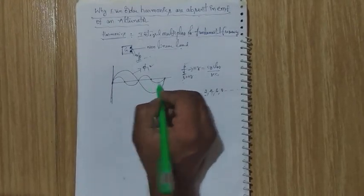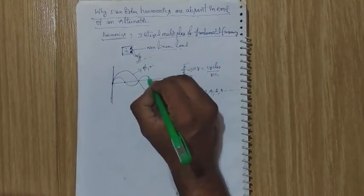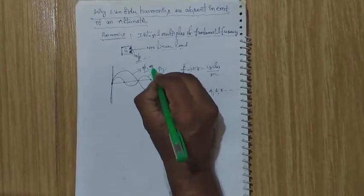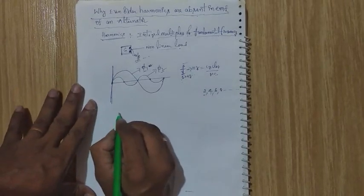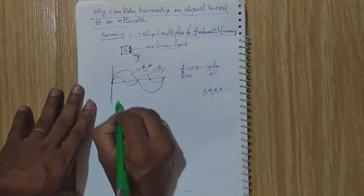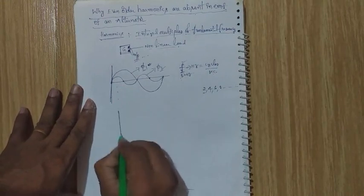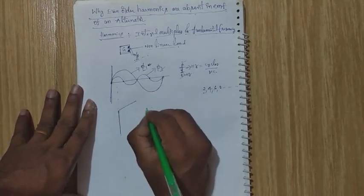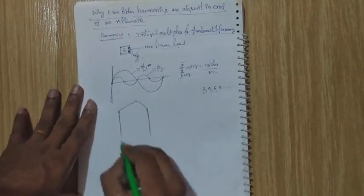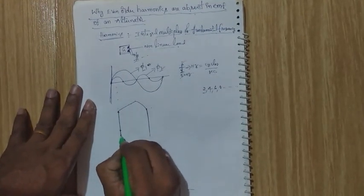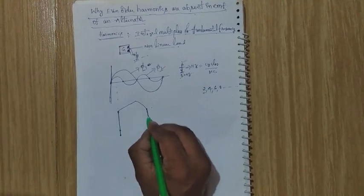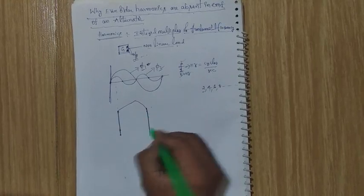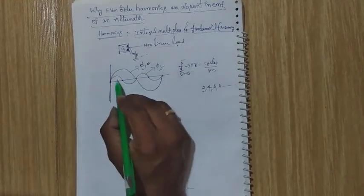This second harmonic flux waveform is represented by Pi₂. So Pi₁ is the fundamental flux wave and Pi₂ is the second harmonic flux wave. Now let us consider a coil — a single-turn coil. This is coil side one and this one is coil side two.